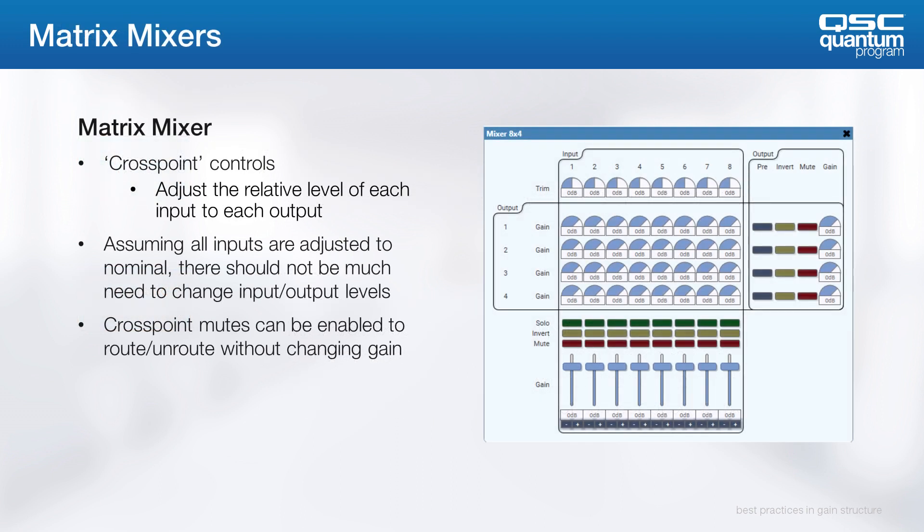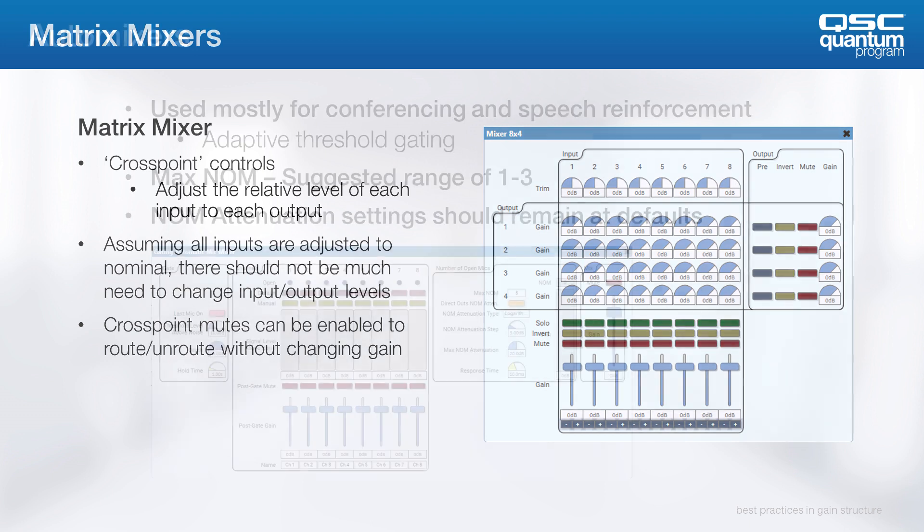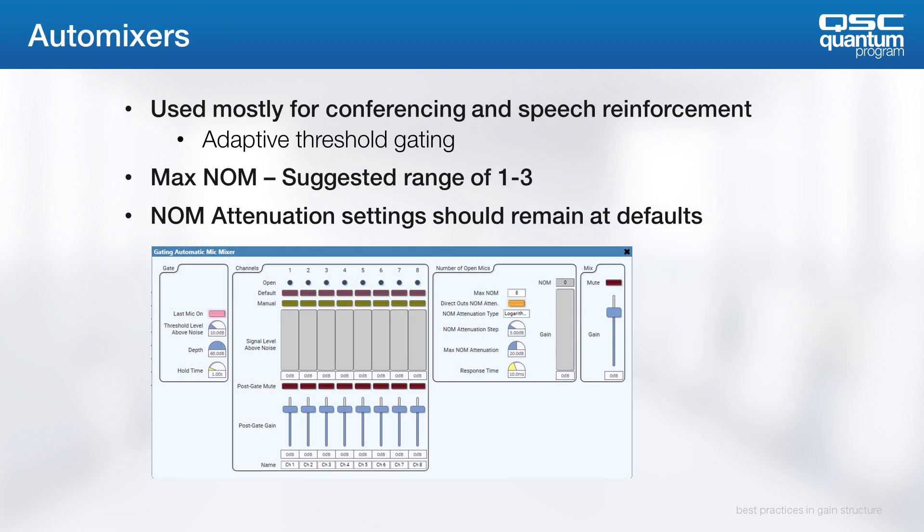The matrix mixer allows you to adjust crosspoint controls by adjusting the relative level of each input to each output. Theoretically, if your inputs enter the matrix mixer at a nominal level, changing the relative input and output levels should be simple. Crosspoint mutes can be enabled to turn routing on and off without changing the gains.